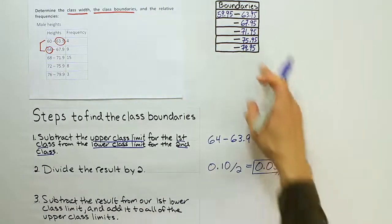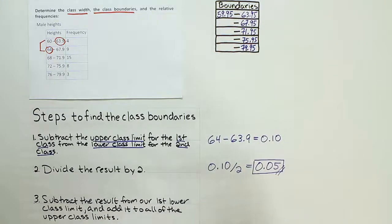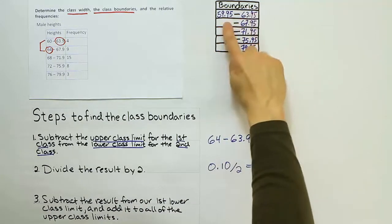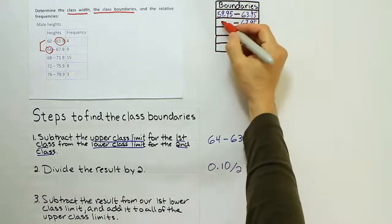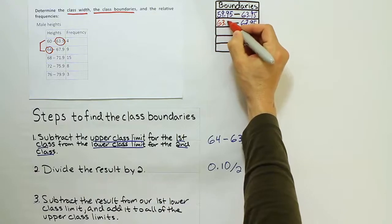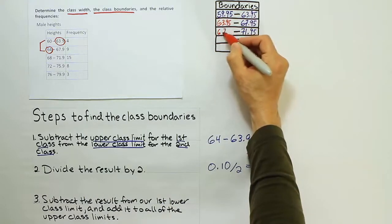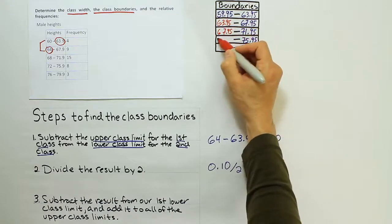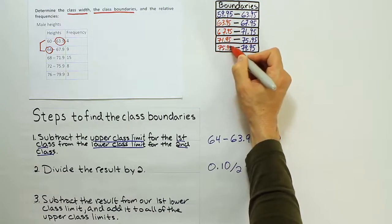Okay, now you may be wondering, where are these other boundaries going to come from? They are actually just these guys repeated over in that position. So that means this 63.95 will be written down here. So we just copy the number on the diagonal, 67.95, 71.95, and 75.95.